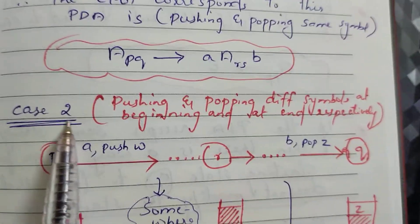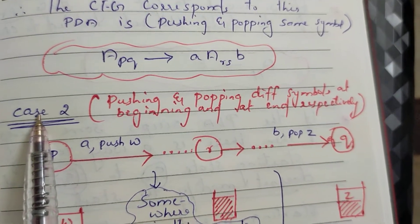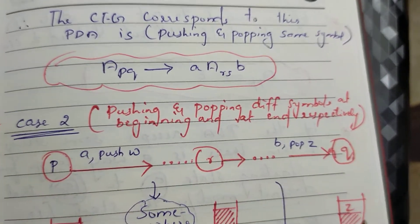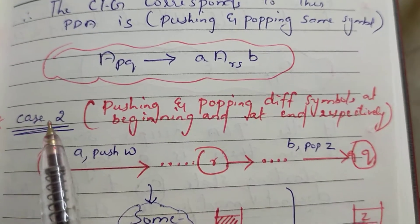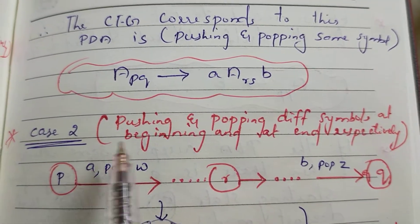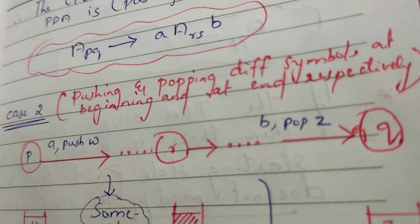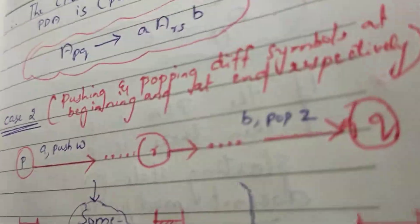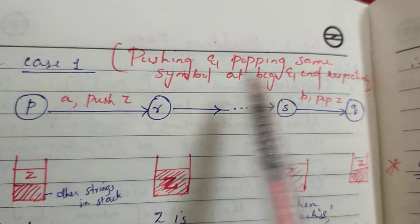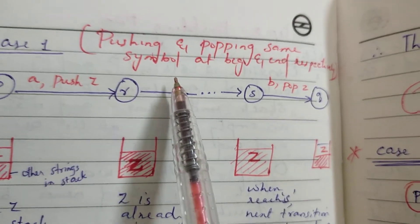In case 2, let's push the element in the starting state. If we want to hit and pop it at the beginning, we have the same element at the beginning and at the end. Now if we want to push and pop at the beginning, in case 2, there is a different element rather than the beginning and ending state. So we will explain the same element in this case. We will have a corresponding context-free grammar. Let's start the case: pushing and popping the same symbol at beginning and end.